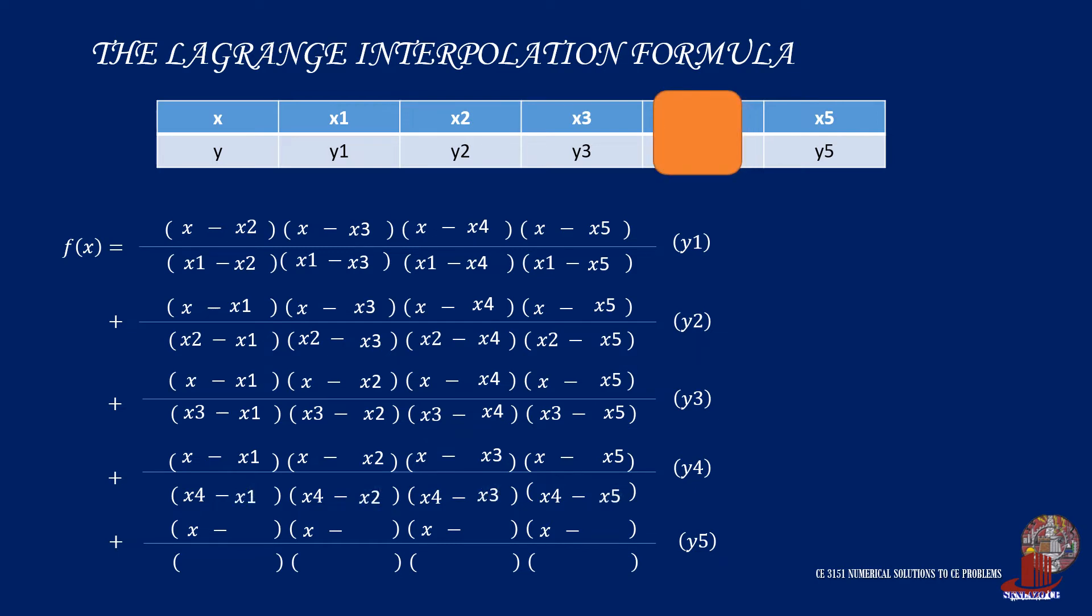The last term will also follow the same format. Isolate data point 5, use x5 in the denominator, and subtract x1, x2, x3, and x4 in each quantity in both the numerator and the denominator. And that will complete Lagrange's interpolation equation—a rather long computation but without the complexities of a divided difference table.